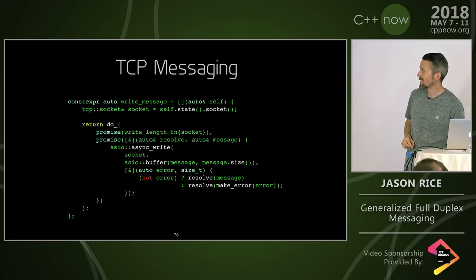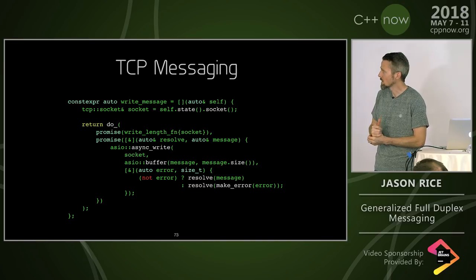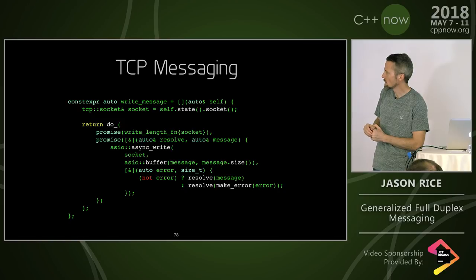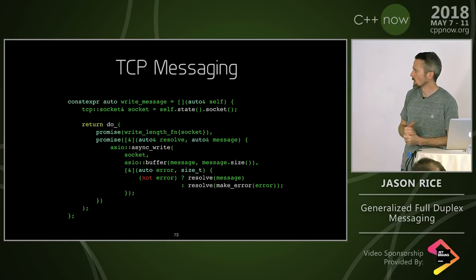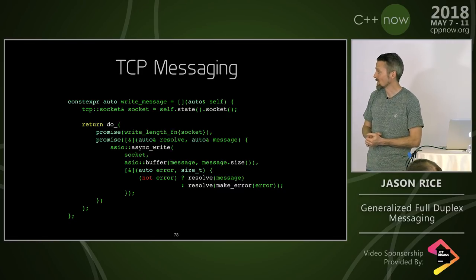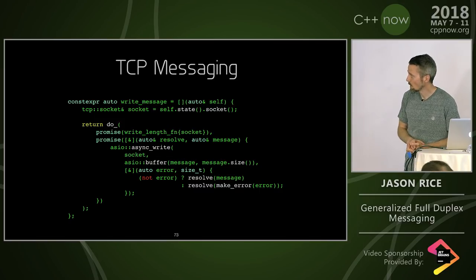Here's write_message. It's a function that returns a promise; it captures the state object if it wants. Write_length captures the socket in a different way. The second promise doesn't need to own any buffer object, so it can just be a lambda. It receives the messages as its input value and writes to the socket, resolving a message or an error. The message gets passed down to the TCP socket writing — there wouldn't be anything below that.